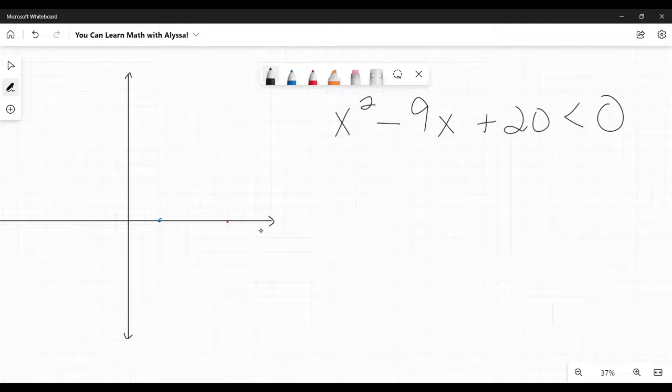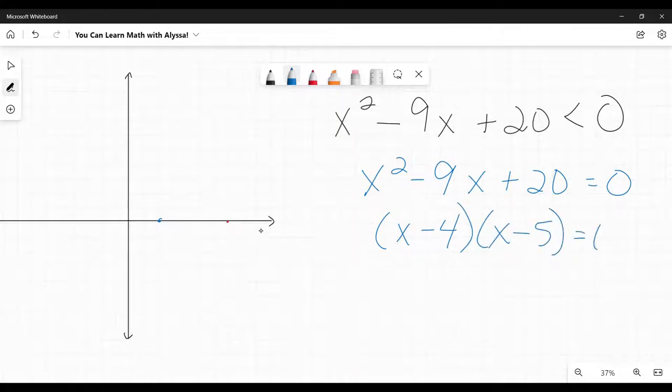Say x squared minus 9x plus 20 is less than 0. Now we're going to graph this equation. x squared minus 9x plus 20 equals 0. So to graph this, we are going to factor it, and I'm going to ask what multiplies to 20 and adds negative 9. That's negative 4 and negative 5. So factoring would be x minus 4, x minus 5 equals 0. Again, if this does not look familiar, please, please watch the videos on factoring first.